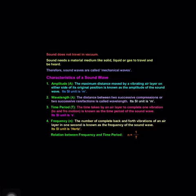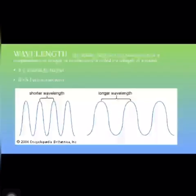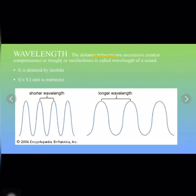We shall now discuss the first characteristic used to describe a sound wave. In this video we are going to discuss the wavelength of a sound wave. Wavelength is the distance between two successive or consecutive crests or troughs — the distance between crest to crest or trough to trough is called wavelength.